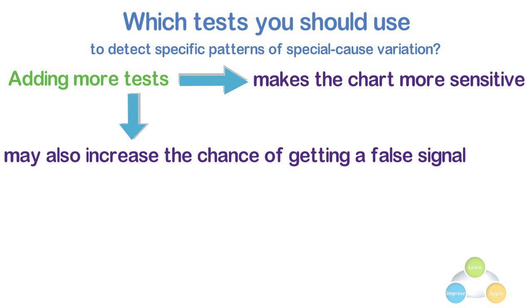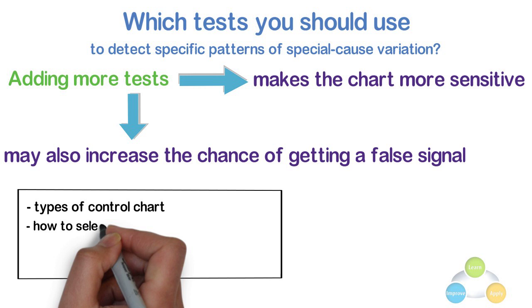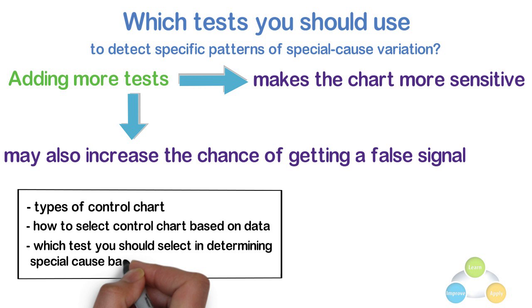Please have a study of it so that the latter part will be very easy. The remaining part like types of control chart, how to select a control chart based on data, which test you should select in determining special cause based on the data and to avoid false signal and thereby to avoid the tampering to the process and many more in the next video.